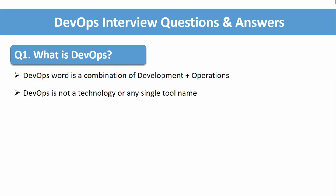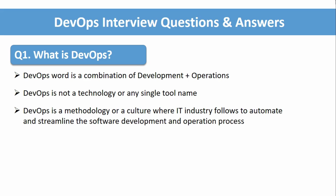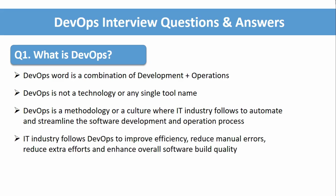So what is DevOps exactly? DevOps is a methodology or a culture that the IT industry follows to automate and streamline the software development and operations process. Most organizations today are adopting this methodology. DevOps is not a single tool or technology — avoid that concept. DevOps is a methodology or culture that the IT industry follows to automate and streamline both the development and operations processes.